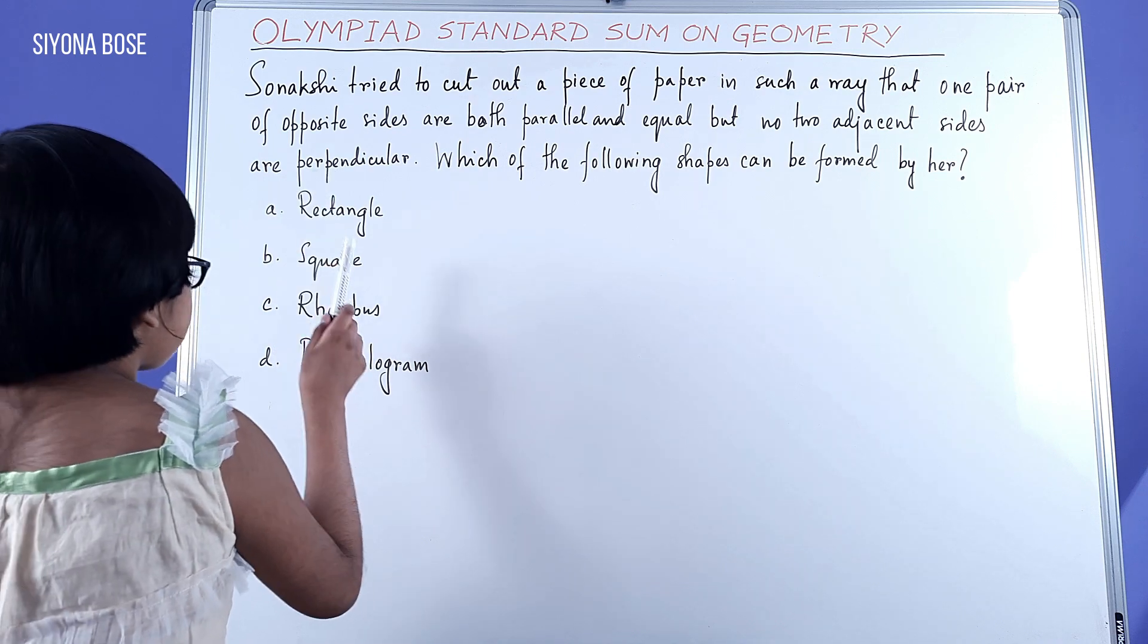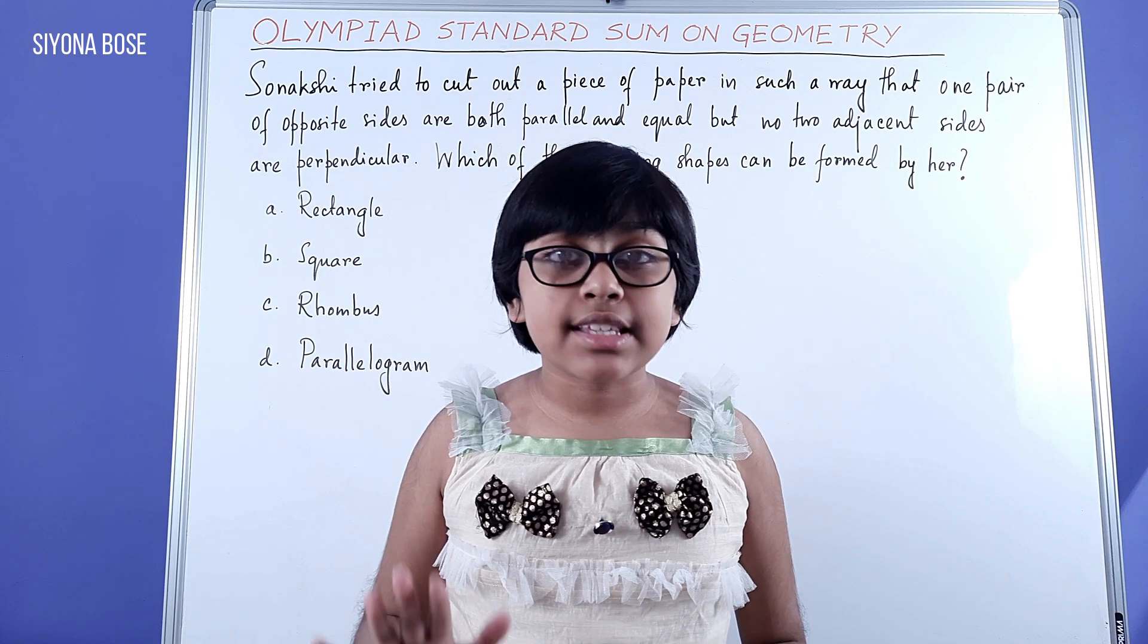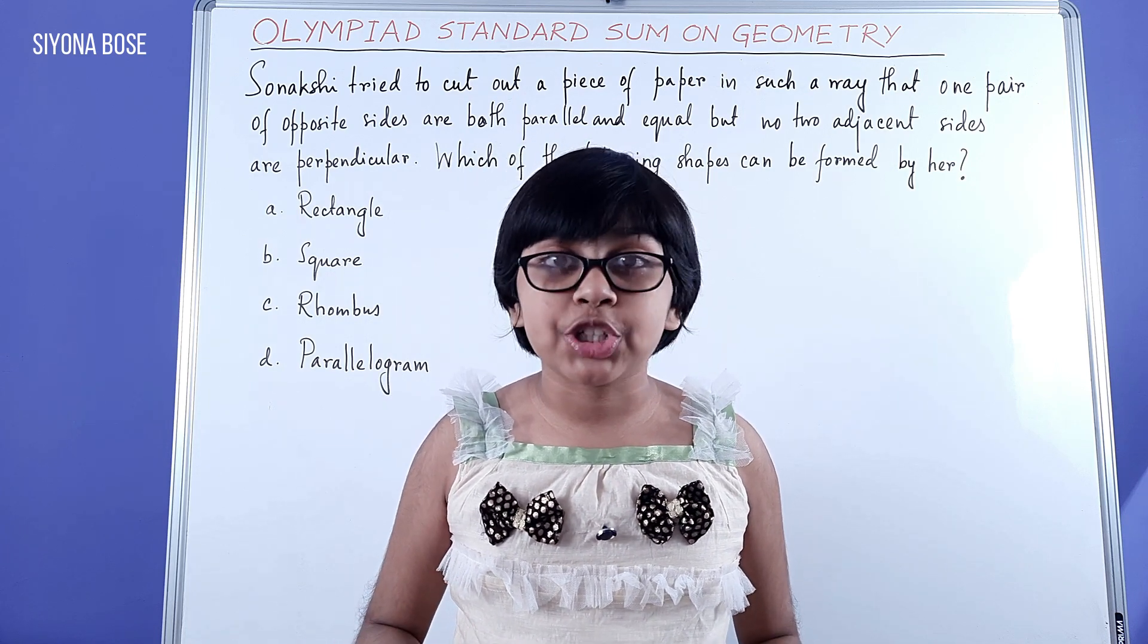In particular, which of the following shapes can be formed by her? These are the options: rectangle, square, rhombus, parallelogram. Okay, first let us understand the main information in this sum.